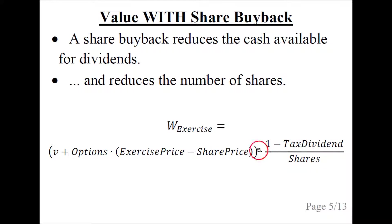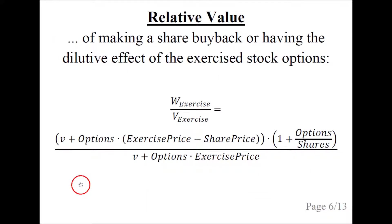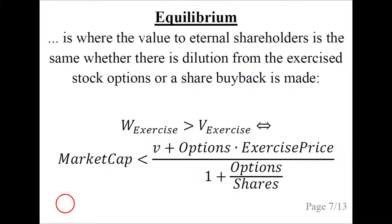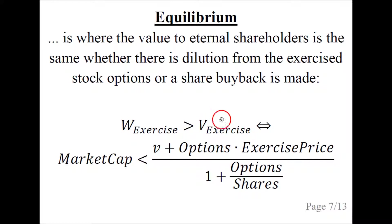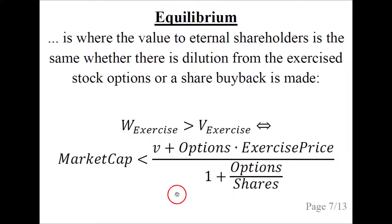We also take the dividend tax into account. The relative value of making a share buyback versus having the dilutive impact of the exercised stock options is expressed using definitions from the previous slides, and we reduce to get a long mathematical expression. The equilibrium is where the value to eternal shareholders is unaffected by the share buyback. Expressed as an inequality, the share buyback increases value whenever the market cap is less than a specific threshold, derived by using the definitions of W exercise and V exercise and reducing the expression.